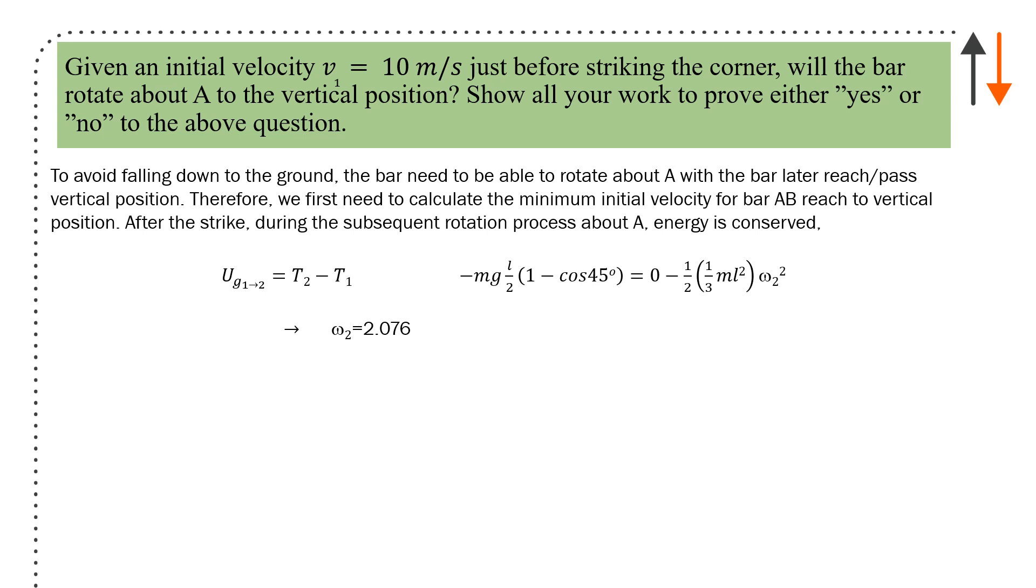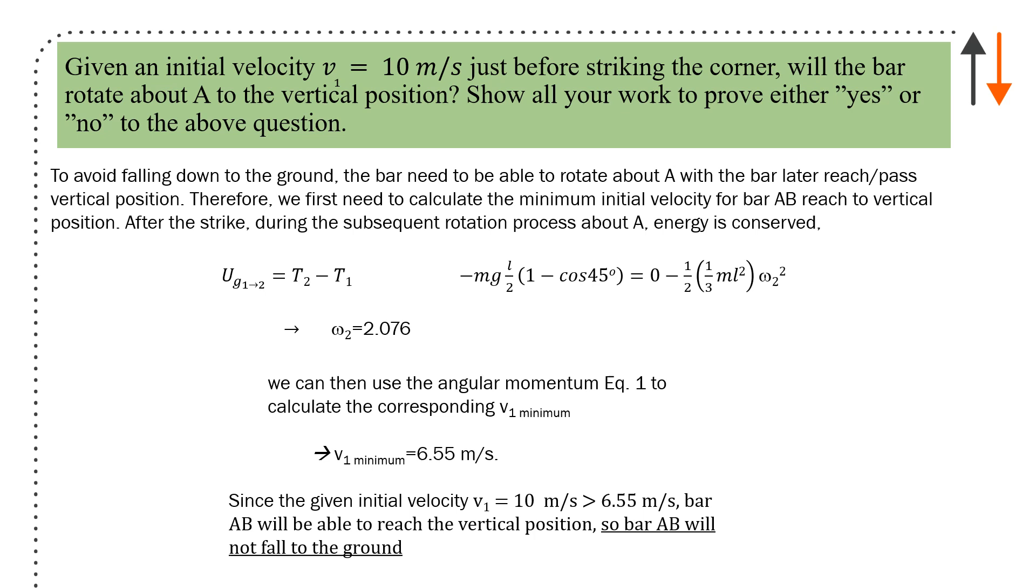Will the bar rotate to the vertical position? To avoid falling to the ground, the bar needs to rotate about A and pass the vertical position. We need to calculate the minimum initial velocity for bar A to reach that vertical position. After the strike, energy is conserved during the subsequent rotation about A. You have potential energy from 1 to 2 and kinetic energy delta T = T_2 minus T_1. In order to just rotate to vertical, the velocity is zero. Substitute both in, calculate all the terms. Omega_2 equals 2.076 rads per second. Use angular momentum from equation 1 to calculate the corresponding v_1_min, which is 6.55 meters per second. Now we know that for 10 meters per second initial condition, it will rotate into the vertical position, and bar A will not fall to the ground.